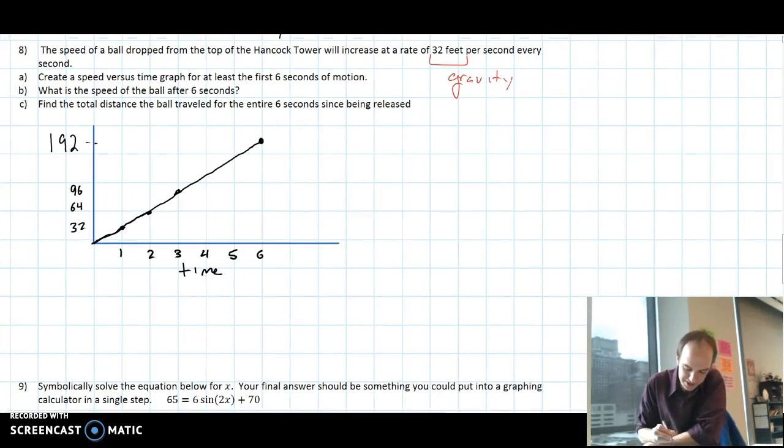Part A, create a speed versus time graph. So it increases at a rate of 32 every second, so you can scale out your x-axis in seconds, 1, 2, 3, 4, 5, 6. And then it just goes up by 32. So I didn't label every single 32, but I labeled the last one by doing 6 times 32, and that gives you 192. So there's the graph. What is the speed of the ball after 6 seconds? That's the same thing as we just labeled, 192 feet per second.